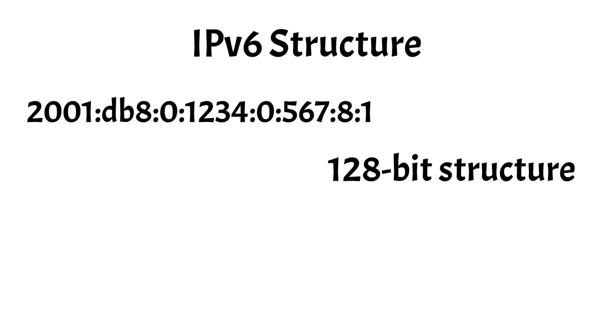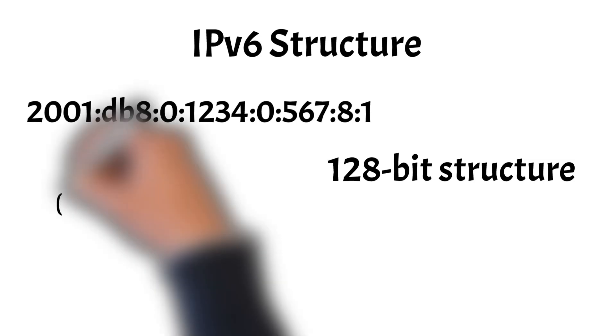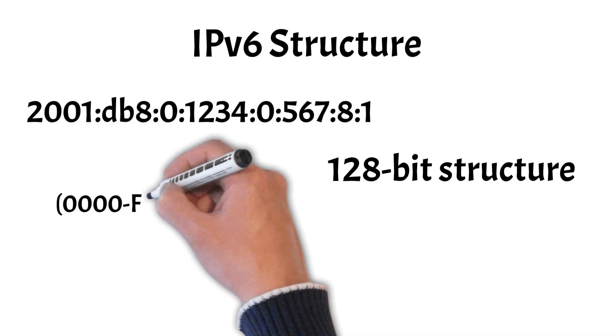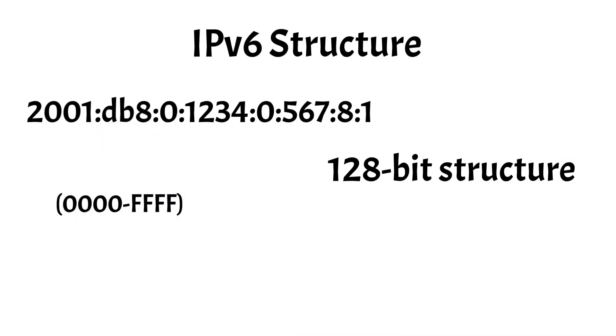Each group can represent a value between 0 and FFFF, providing a vastly larger address space compared to IPv4. For reference,